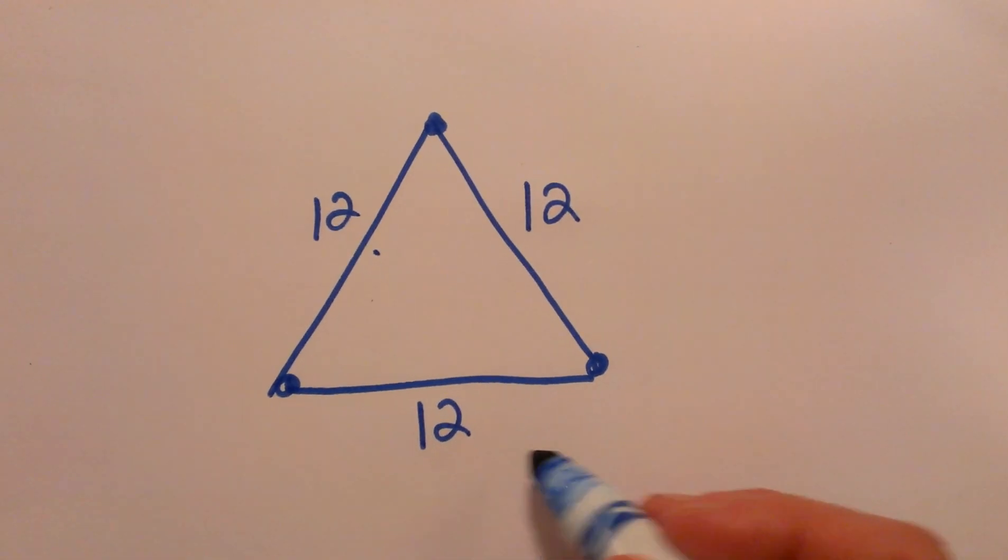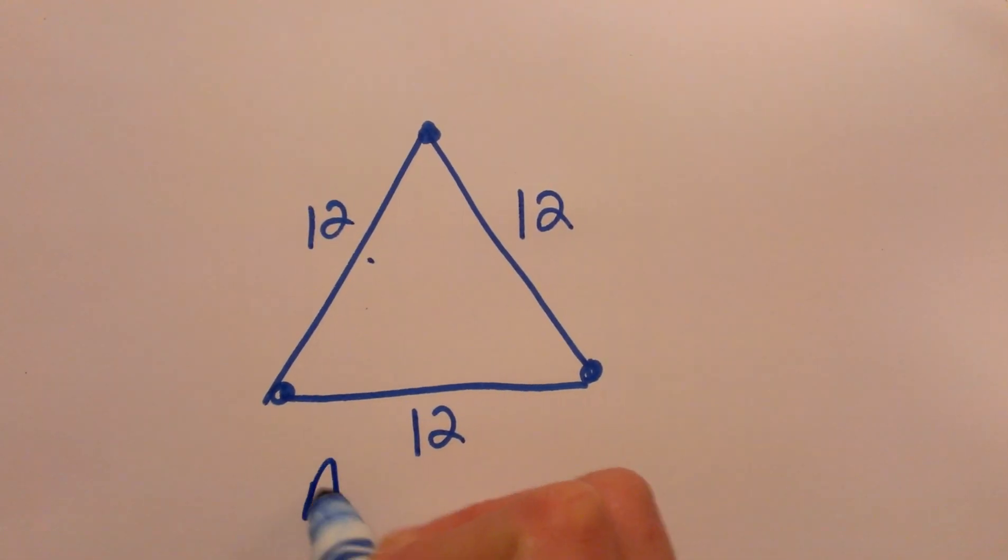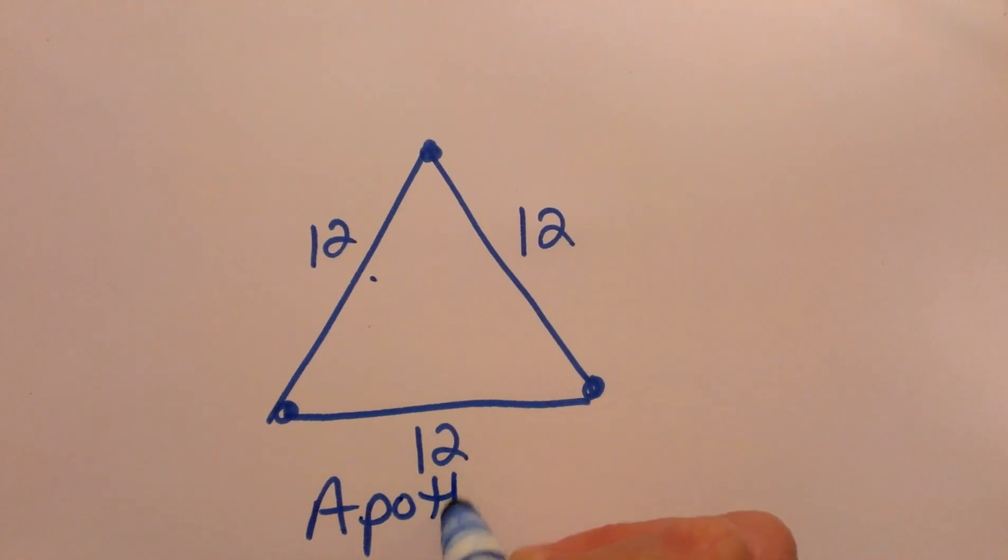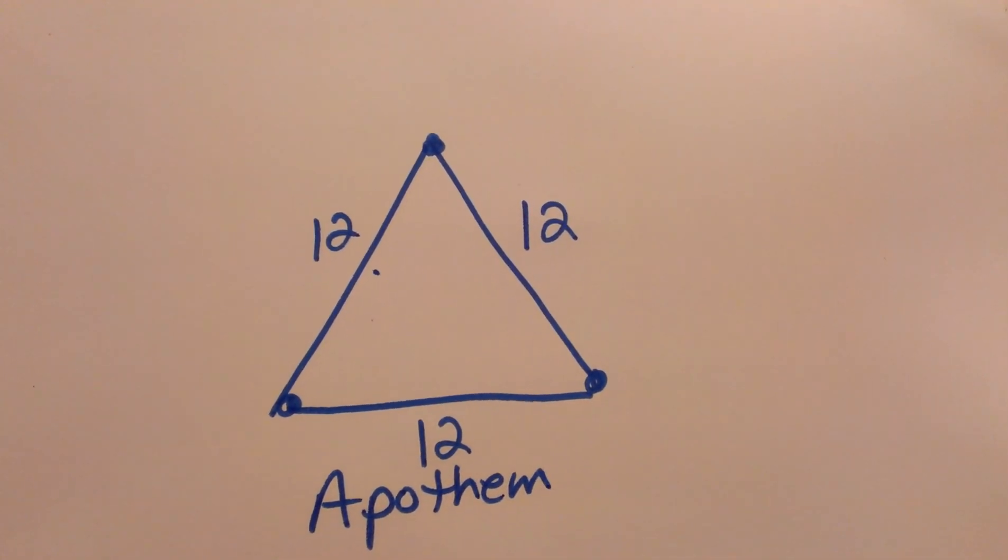We are given an equilateral triangle and we are going to try to find the length of the apothem. So let's define what the apothem is.